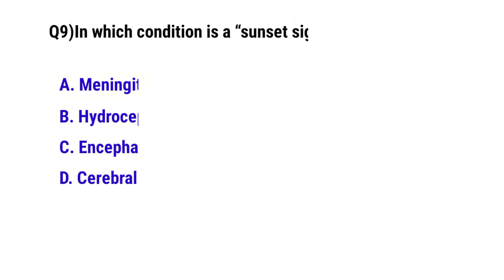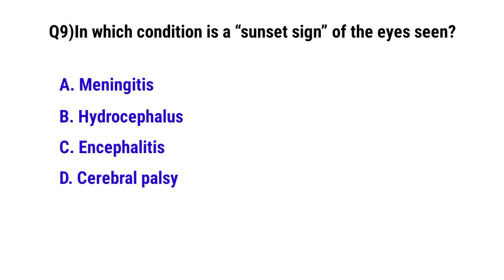Question No. 9. In which condition is the sunset sign of the eyes seen? The correct option is B: Hydrocephalus.